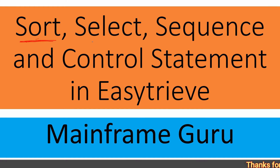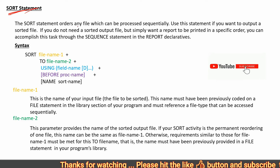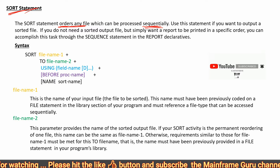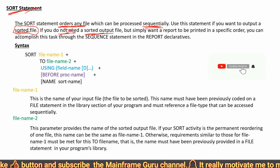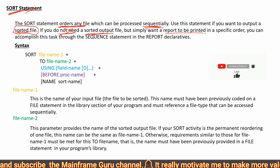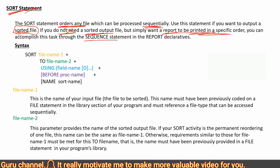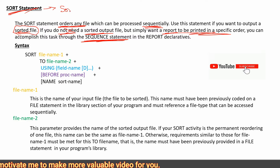Today we will discuss sort, select, sequence, and control statements in EGT — specifically how we can use these statements in EGT. First, what is the SORT statement? The SORT statement is used to order any file which can be processed sequentially. You can use this statement if you want to create a sorted output file. If you do not want to create a sorted output file but simply want a report printed in a specific order, then you use the SEQUENCE statement.